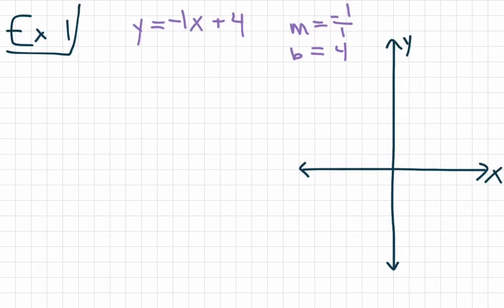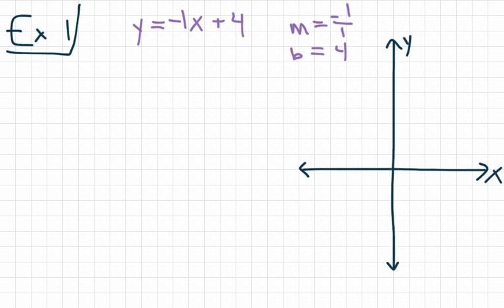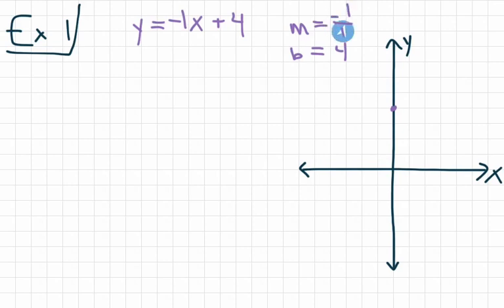Now when we graph this equation, we have our two critical pieces: slope and y-intercept. We start by plotting a point at our y-intercept. Even though slope appears first in the equation, we start with b equals 4. This y-intercept tells us how far to go up or down on the y-axis. Since b is positive 4, we start at the y-axis and count up 4 units to place our first point. Now I need to plot more points for this line, and for that I'll use my slope.